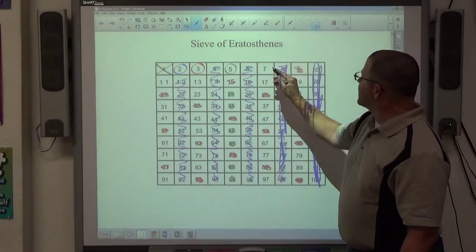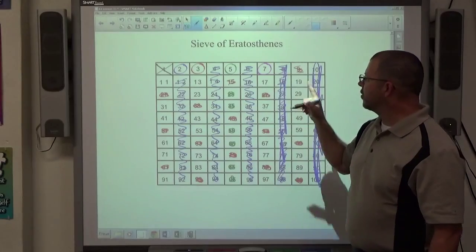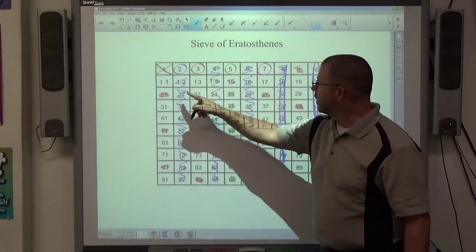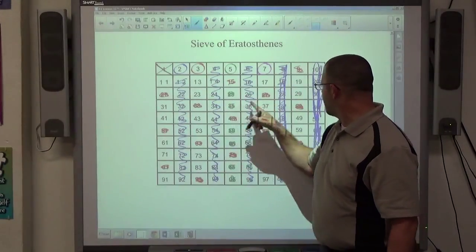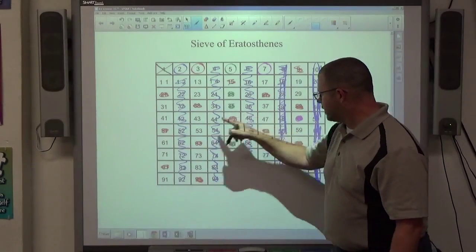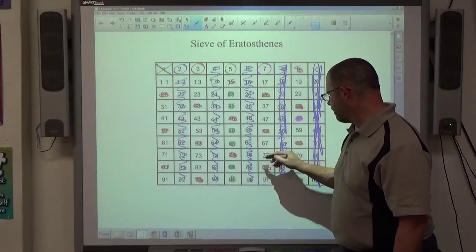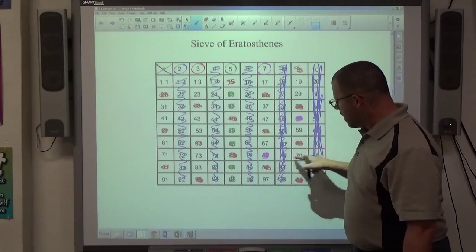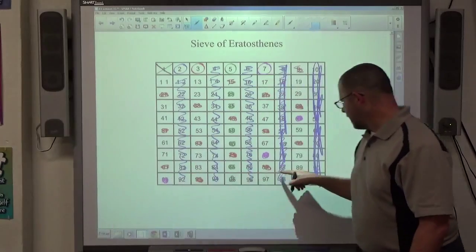Next number on the list is 7. We go multiples of 7, counting by 7. 7, 14, 21, 28, 35, 42, 49, 56, 63, 70, 77, 84, 91, 98.